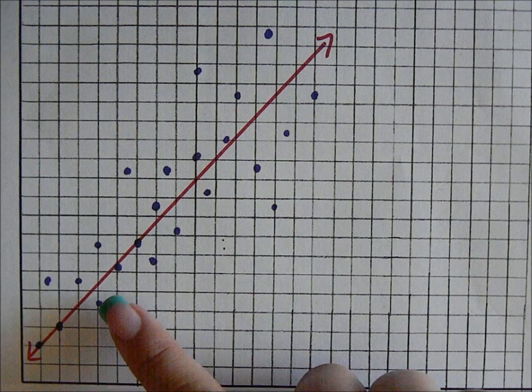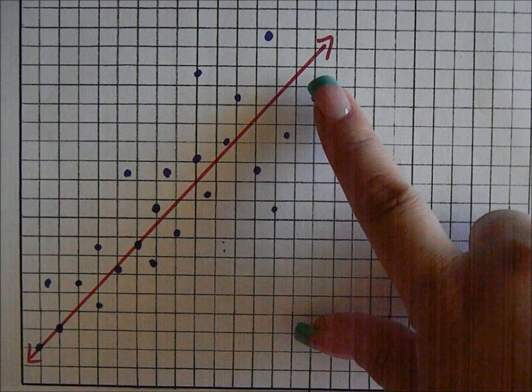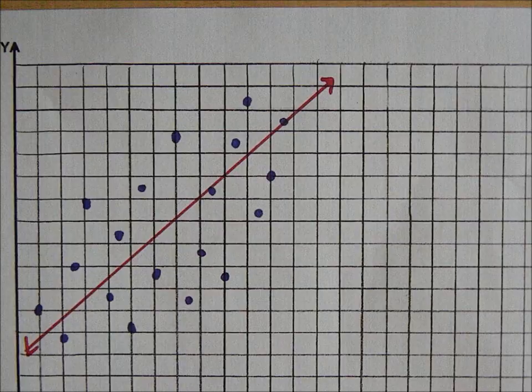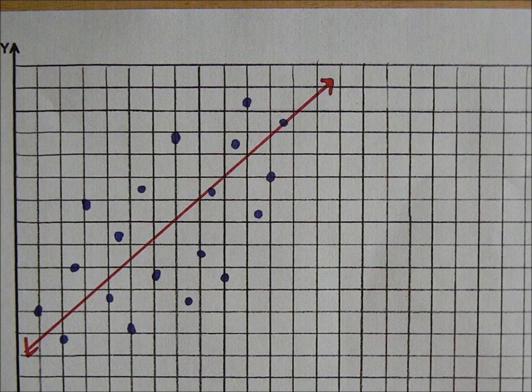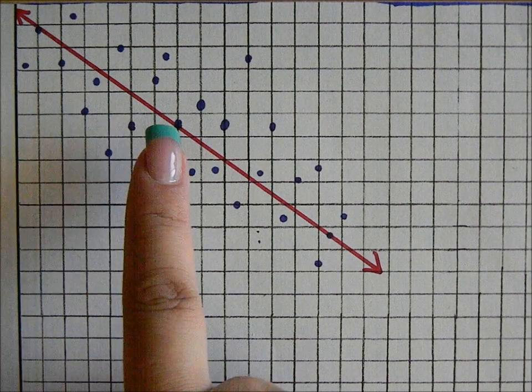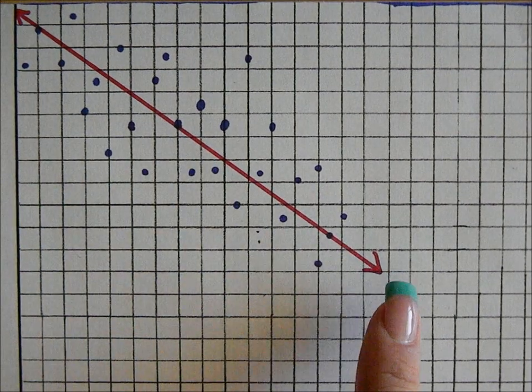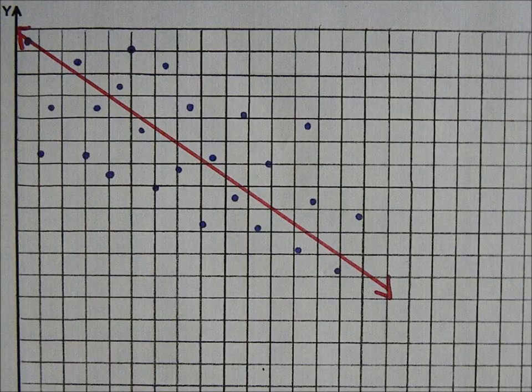The line of best fit is a line that describes the direction of the data. When we look at the line of best fit, it needs to be in the center or as close to as many points as possible.